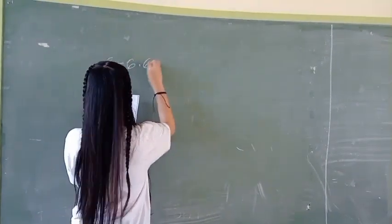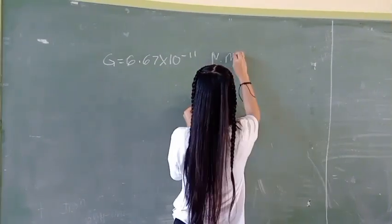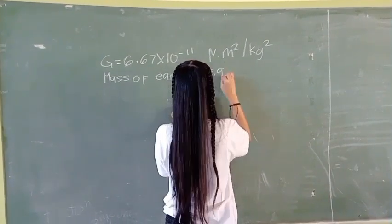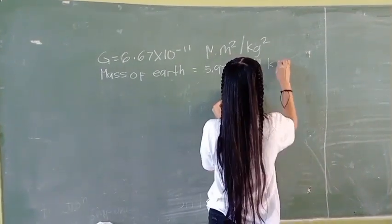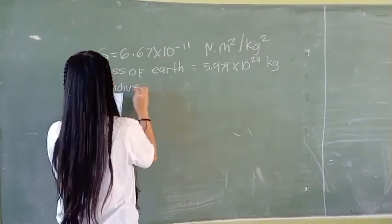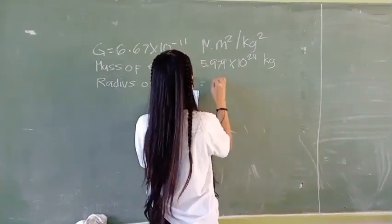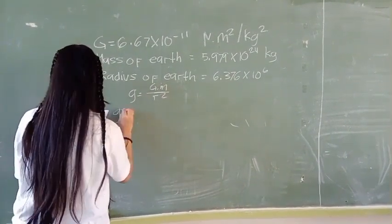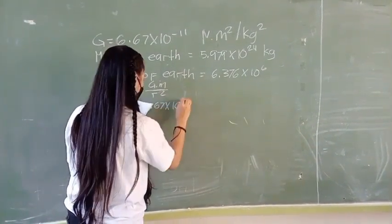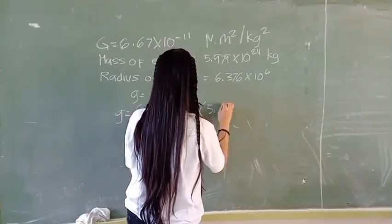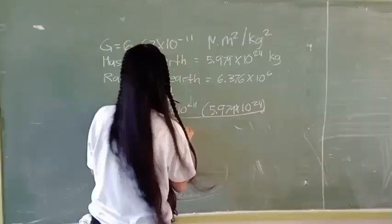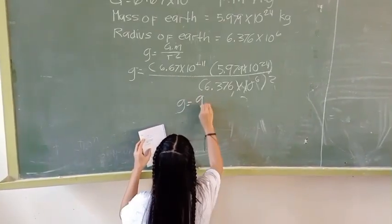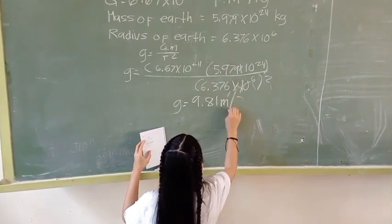The acceleration due to gravity is 9.81 meters per second squared on the surface of Earth, because of the size of Earth and our distance from its center. This means that an object on Earth will accelerate 9.81 meters per second every second if in free fall due to gravity. Throughout space, gravity itself is constant — it is the acceleration due to gravity that changes, and that is what we mean when we say gravity is 9.81 meters per second squared.